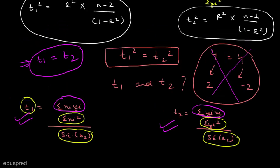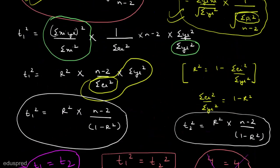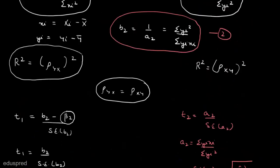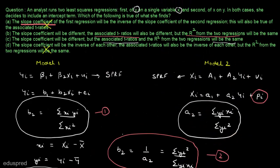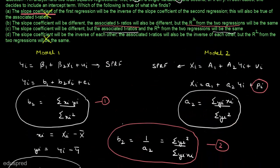So the associated t-ratios are also the same. This means the answer to this question is Part C, which states that the slope coefficients will be different, but the associated t-ratios and the R-squared from the two regressions will be the same. Part C is the correct answer.